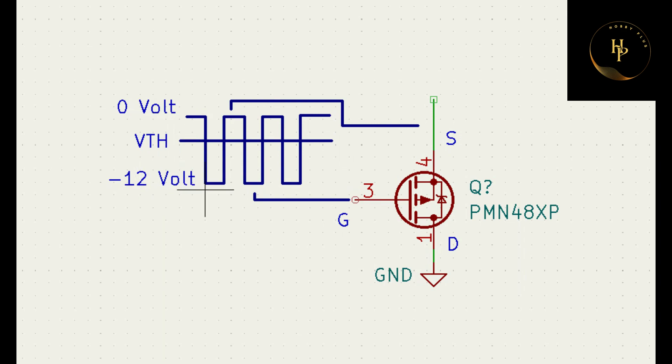When pulses appear on this gate, suppose this voltage is 0, so MOSFET is off. Gate goes to minus 12 volt, MOSFET goes to on or short.